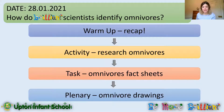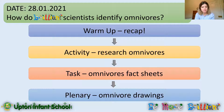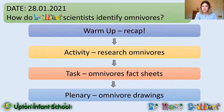We have been looking at two types of animals based on what they eat — they're called herbivores and carnivores — and today we're going to look at how brilliant scientists identify omnivores. We're going to learn about the final type of animal diet, which is omnivores. We'll warm up and recap what we've done, then research omnivores, create our final fact sheet about omnivores, and finish off with some lovely drawings.